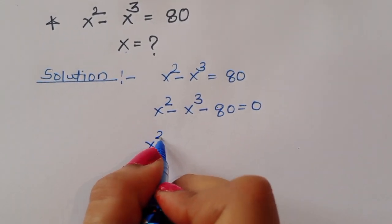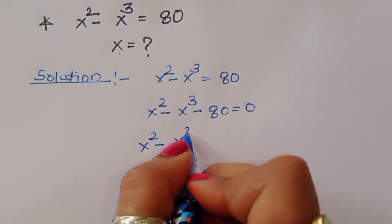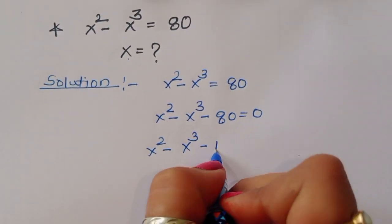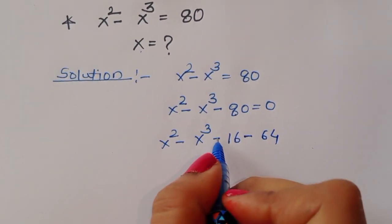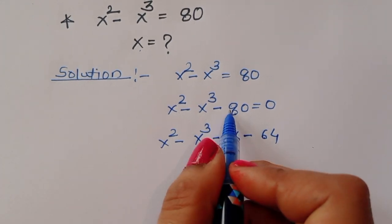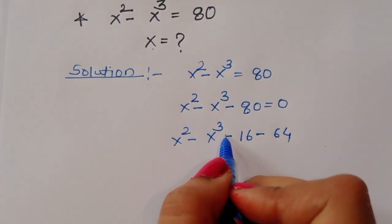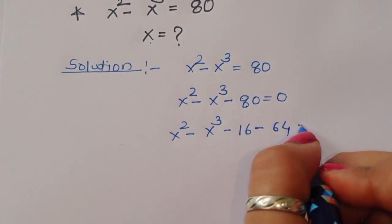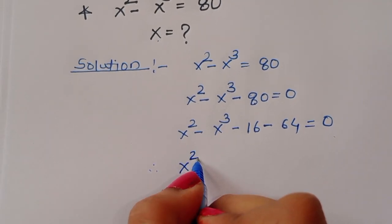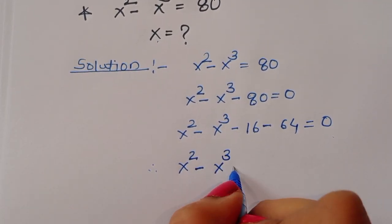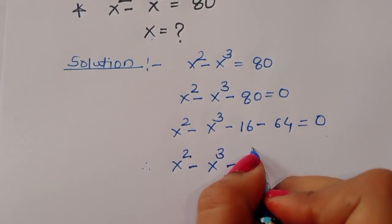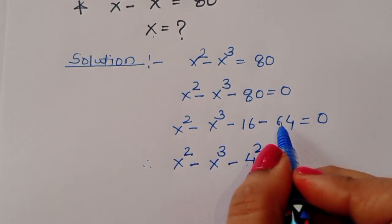Now x squared minus x cubed minus 80. This 80 we can write as 16 minus 64, because 16 minus 64 gives minus 48... let me check: 6+4=10, 6+1=7, 7+1=8, so minus 80 is correct. Therefore x squared minus x cubed minus 80 equals 0. This 16 we can write as 4 squared, that is 16, and 64 is 4 cubed.